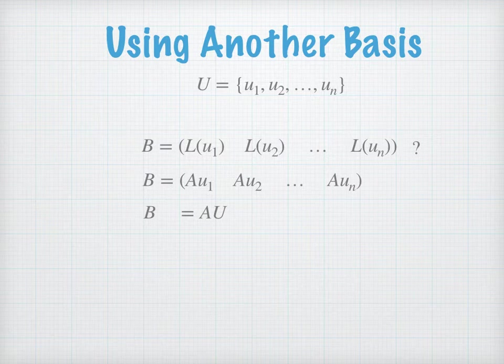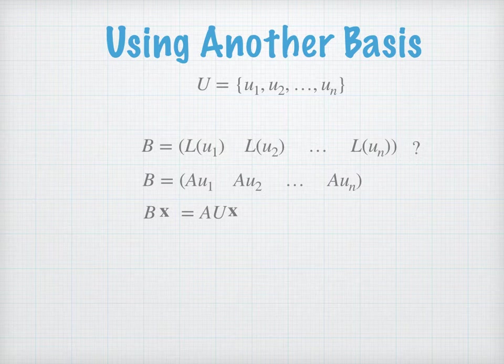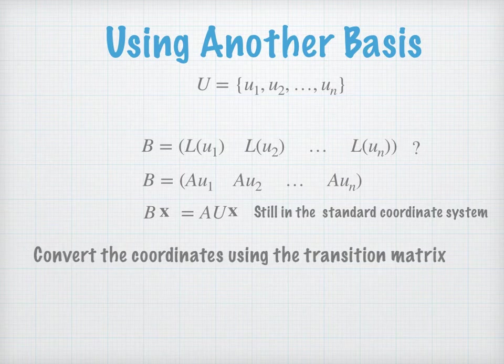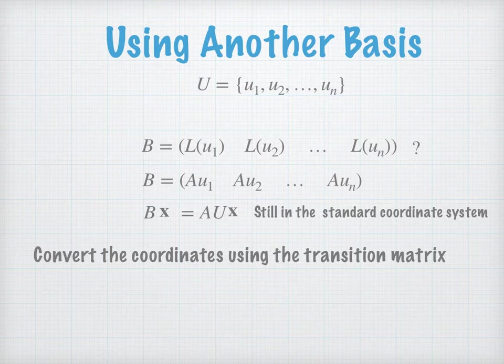Combining A(u1), A(u2), A(un), we get A times U, where U is the matrix formed by columns u1, u2 to un. But when you multiply B times x and A·U times x, you get a vector that is still in the same standard coordinate system — the coordinate system where the standard basis is used. So you still live in the same coordinate system, meaning you need to move to the different coordinate system using the basis U.